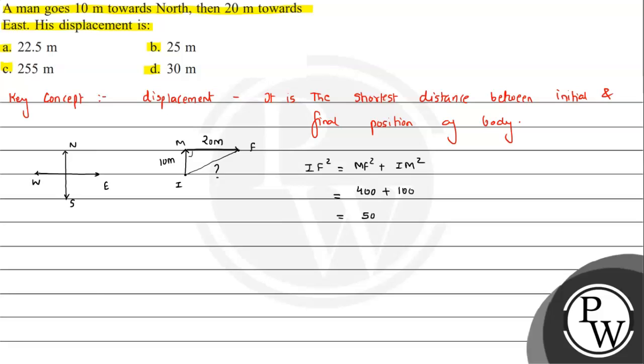So here we can write this as 25 into 20, or else we can write it as IF equals the square root of 500, which equals 22.36 meter. So this is the displacement we are getting.